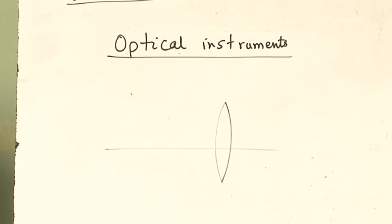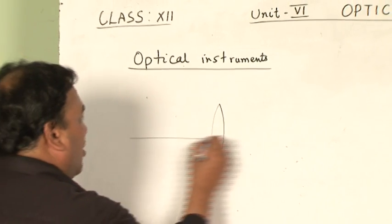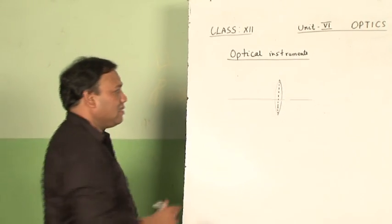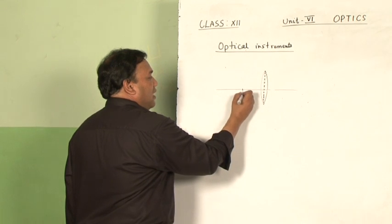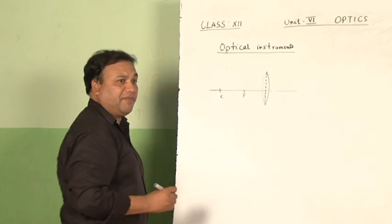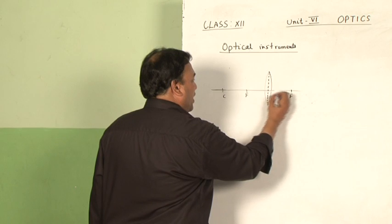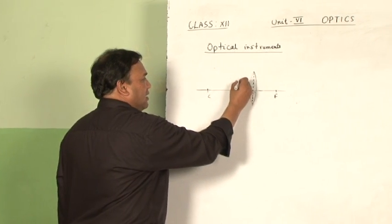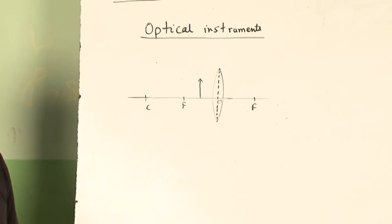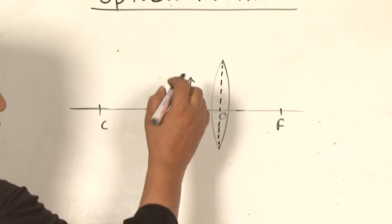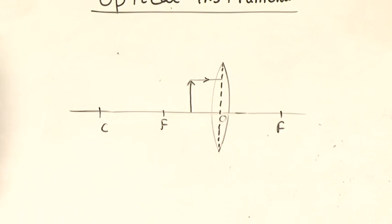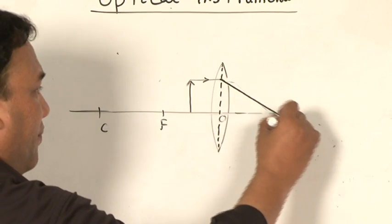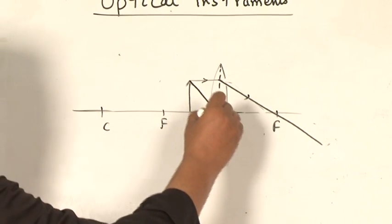I have taken one convex lens here with the principal axis drawn. This is the focus — the principal focus of the lens — and here is the center of curvature. On the other side also, I am representing the principal focus F. When the object is placed between the optic center and the focus of the lens, this convex lens forms a virtual image towards the same side.